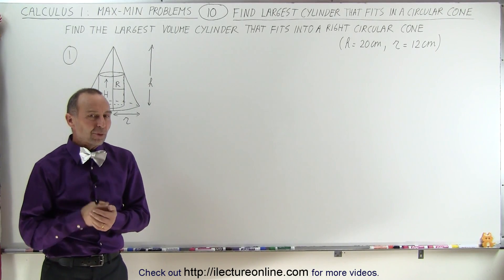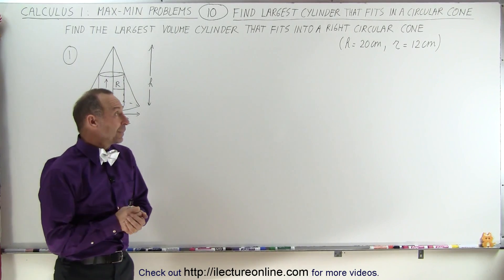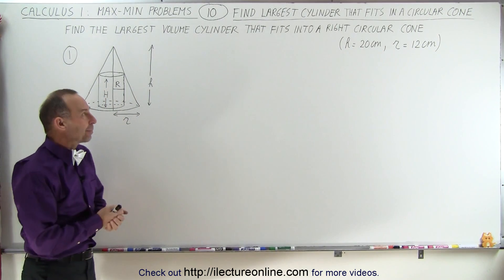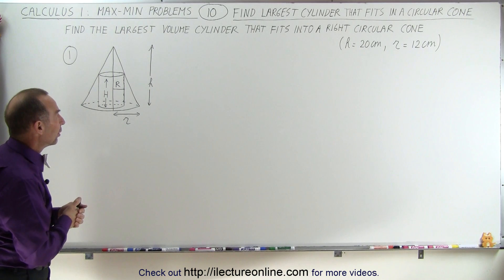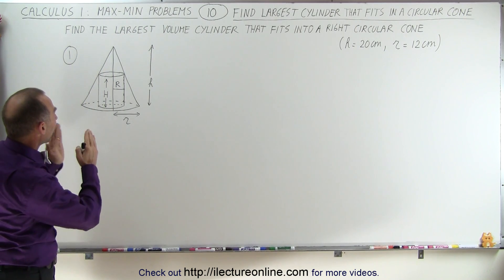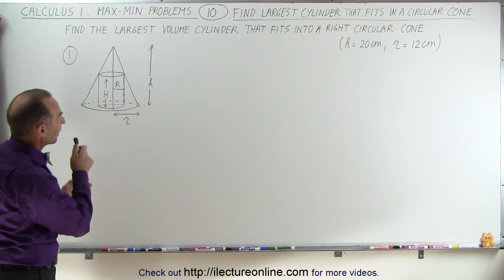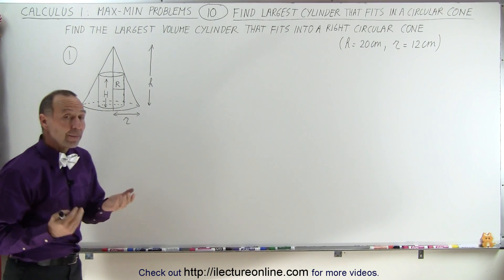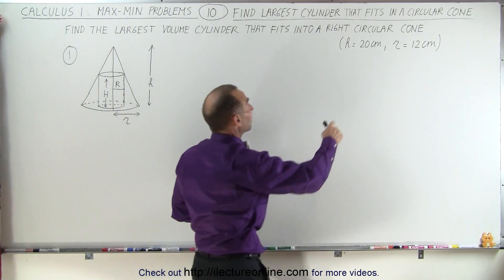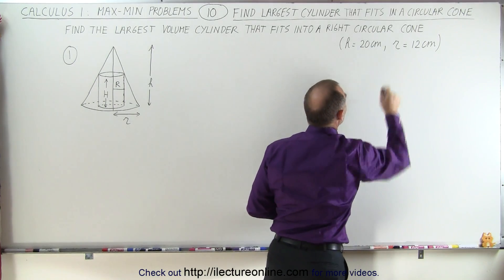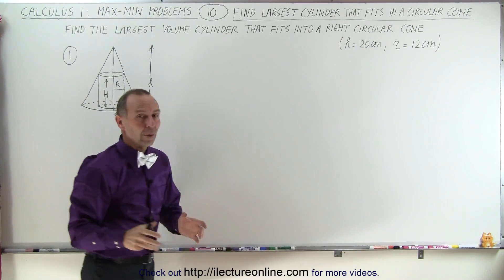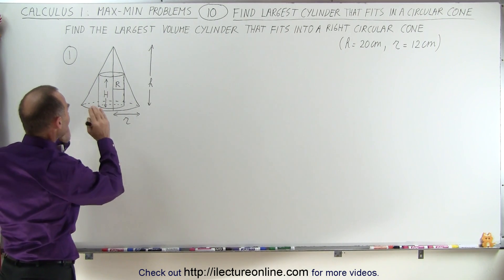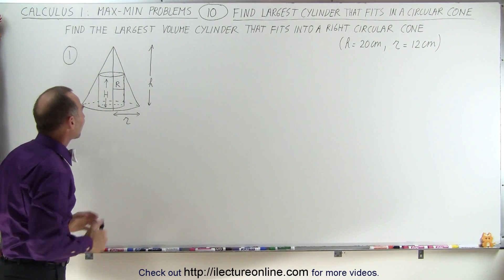Our next example is a little bit more challenging. It is also a very typical problem done in these types of problems. Here we're trying to find the largest volume cylinder that fits into a right circular cone. The cone has a height of 20 centimeters and a radius of 12 centimeters. So how large can that cylinder be such that it has the largest volume and still fits inside that cone?